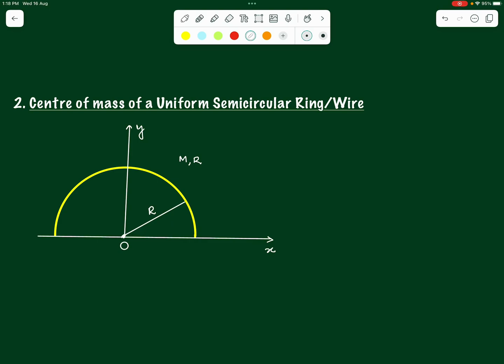What is the property of those elements that we expect? We expect that those elements are such that the integral of x·dm is workable — we can work upon this integral. So we should be able to find out the x-coordinate and y-coordinate of each element. What we do here is consider a small portion of this ring.